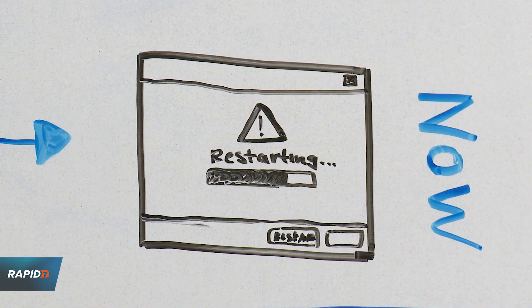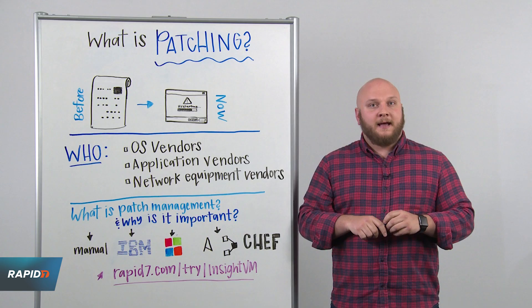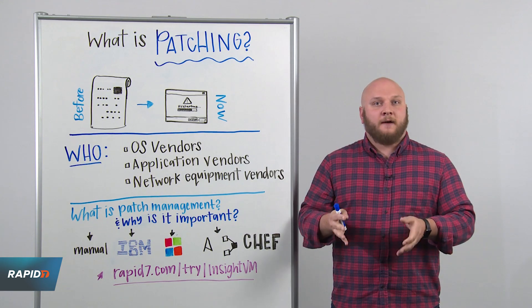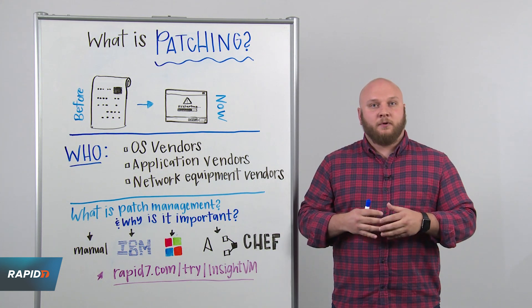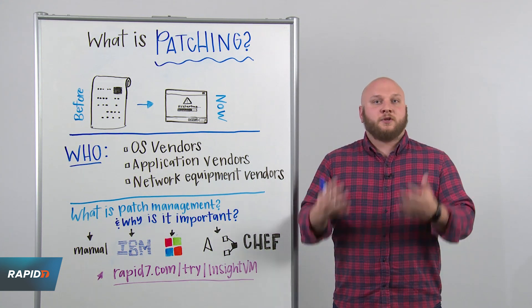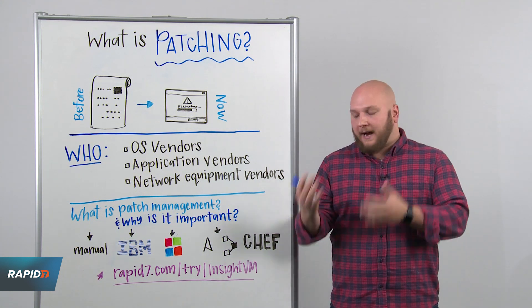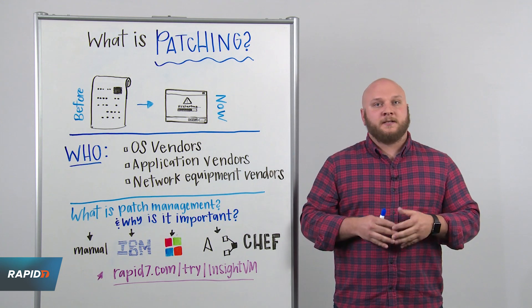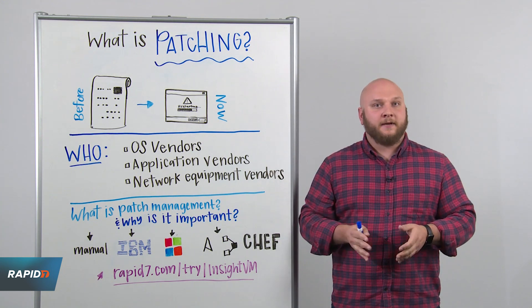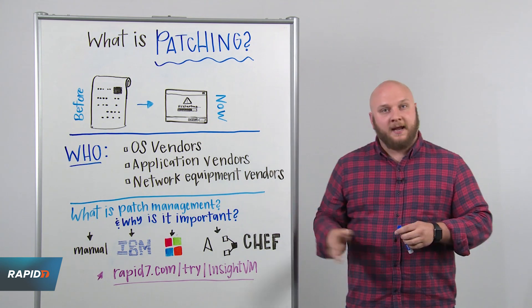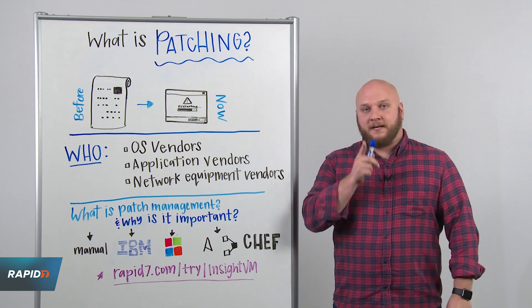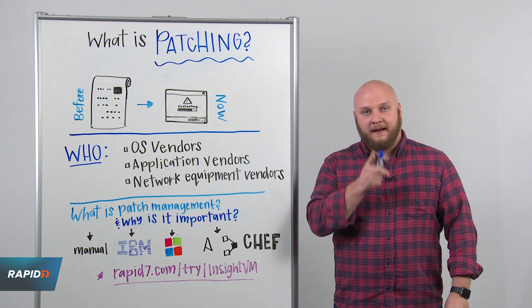We're probably familiar with it when we see the Windows update box pop up on our machine. That means that the software Microsoft has provided to us needs to be retroactively updated in some way — perhaps there was an error in the code that was released or some other kind of issue. When that happens, we install the updates, and make sure you install your updates right away every time.